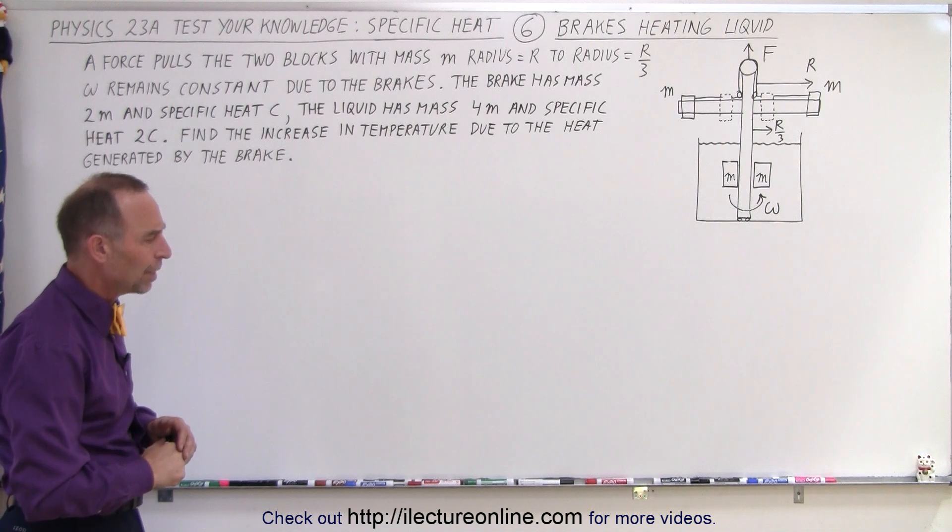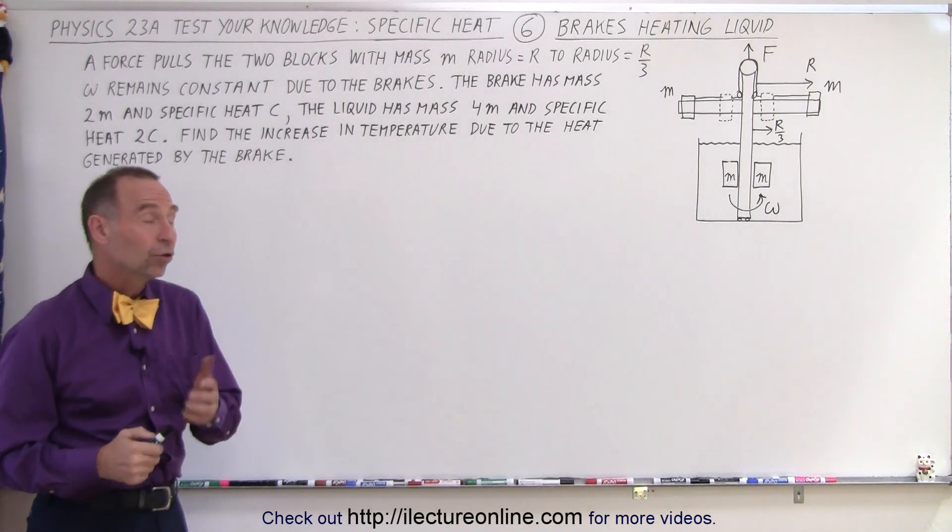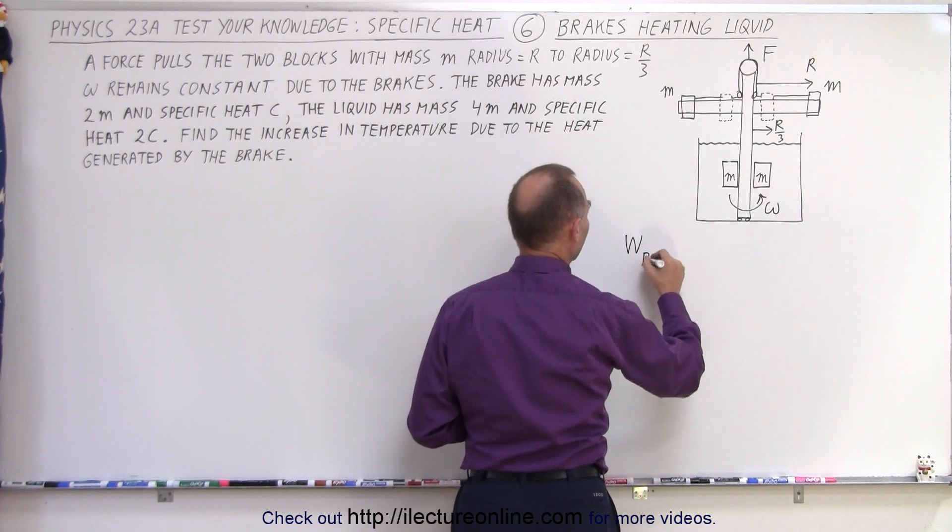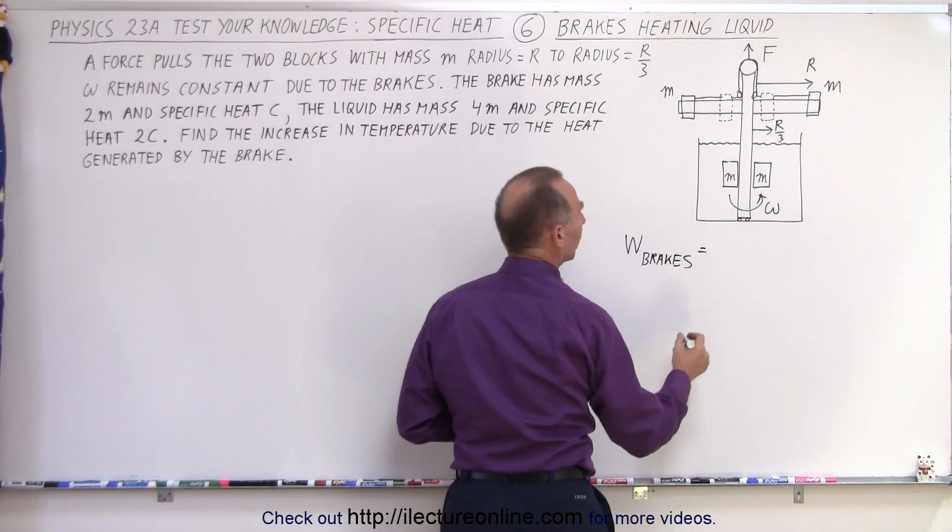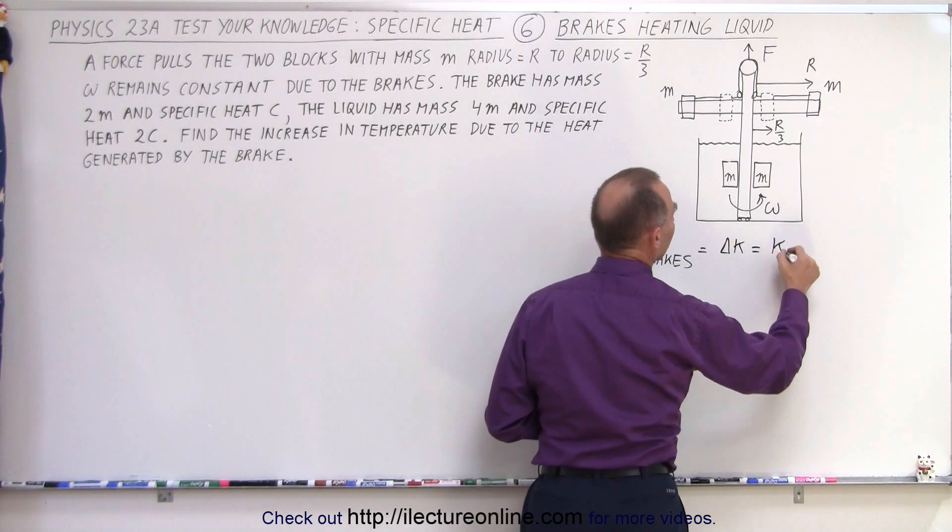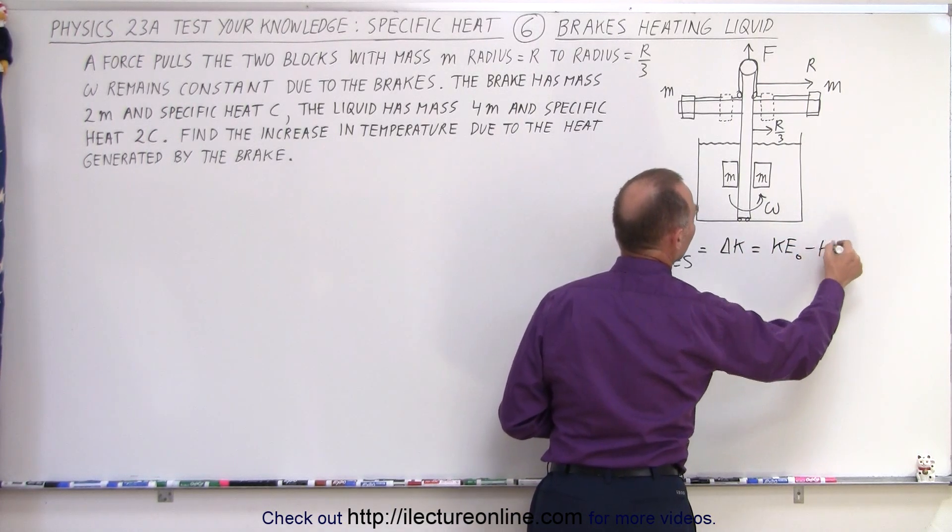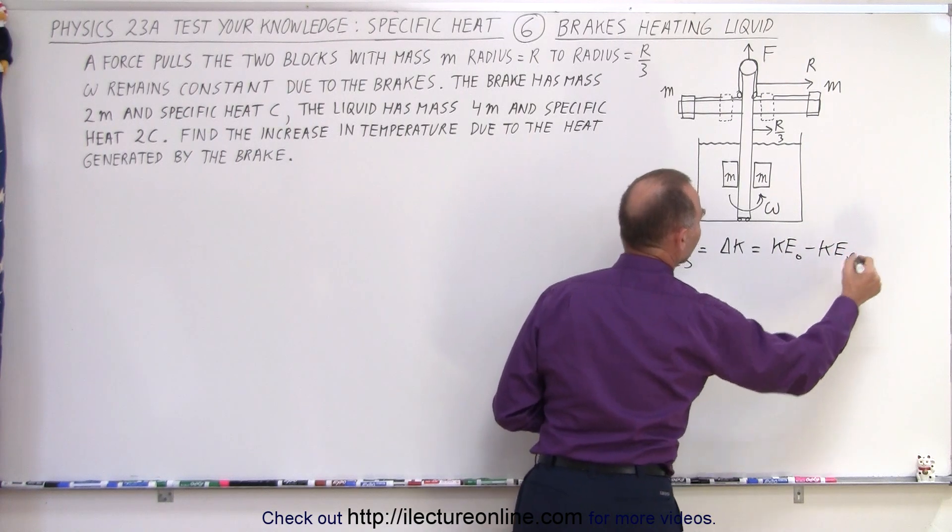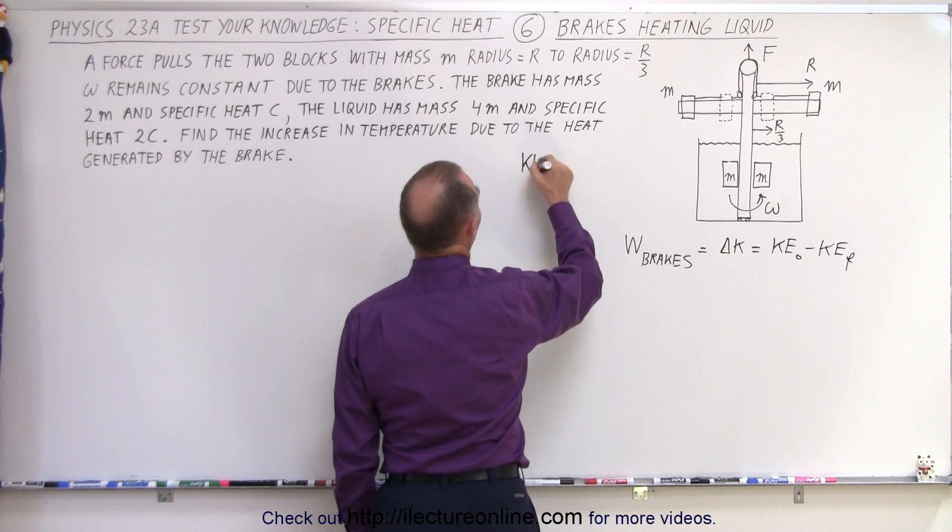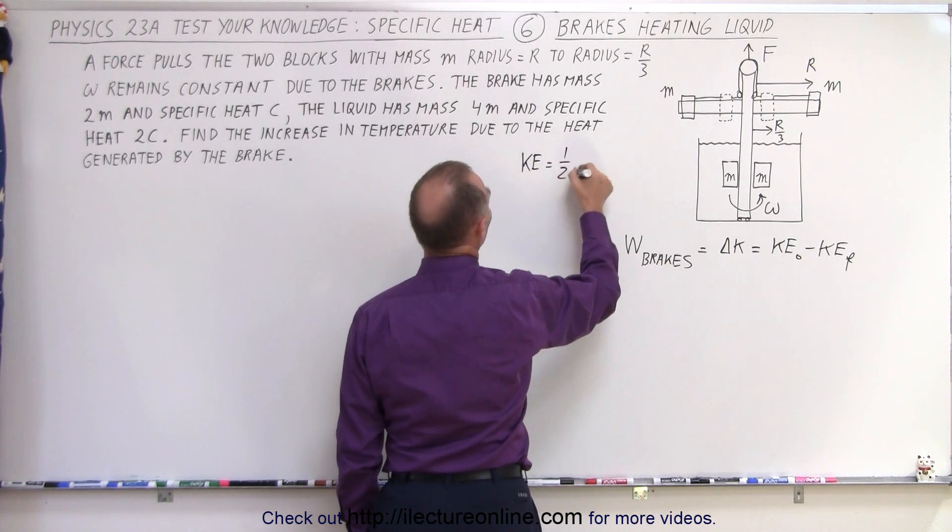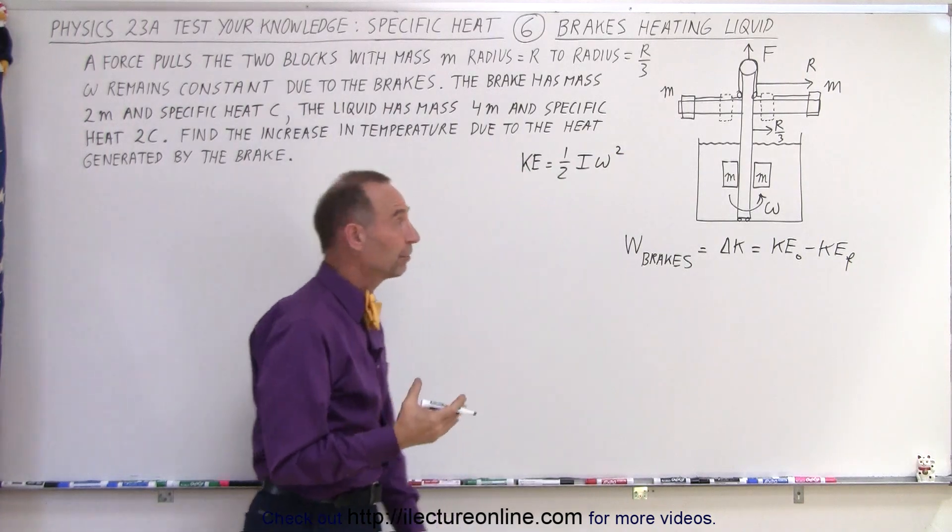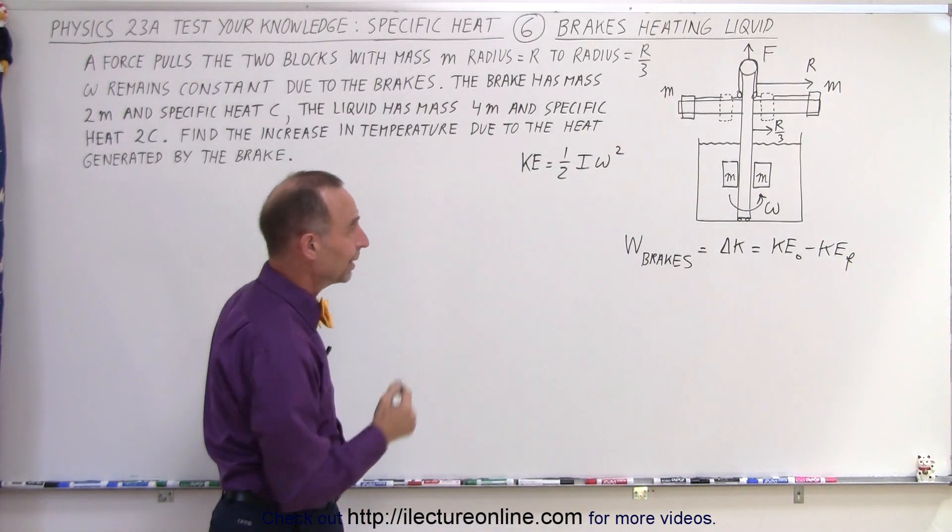In other words, knowing that the brakes have mass 2M and the specific heat C, and the liquid has mass 4M and specific heat 2C, find the increase in the temperature in both the brakes and the liquid. Alright, how do we do that? Well, first of all, we can assume that the work done by the brakes is equal to the difference in the kinetic energy, which means kinetic energy initial minus kinetic energy final. And of course, kinetic energy can be defined as 1 half I omega squared. And of course I, the moment of inertia, is caused by those two rotating masses.